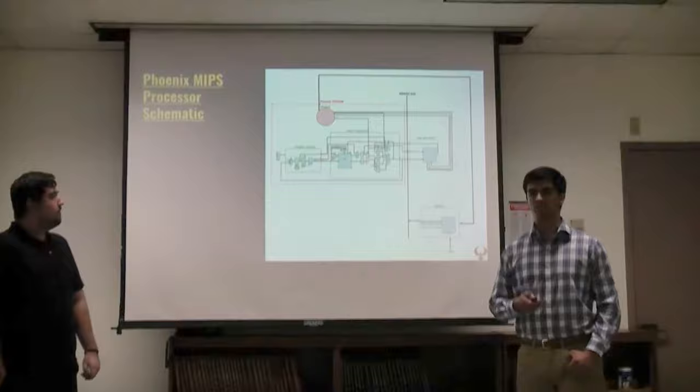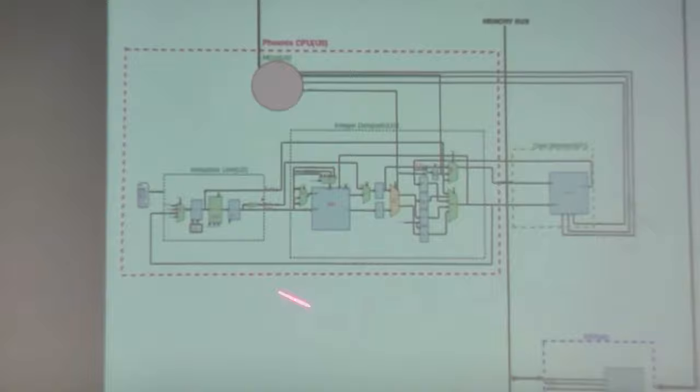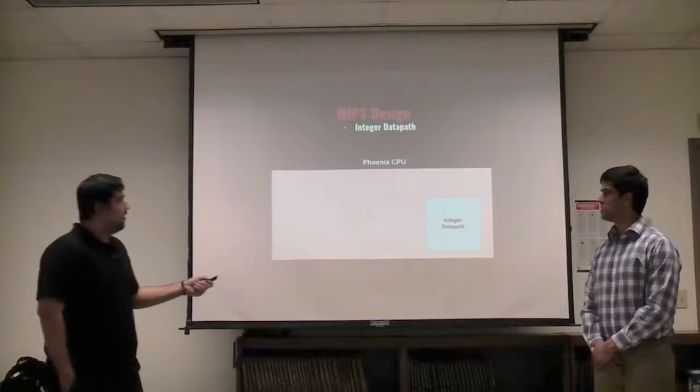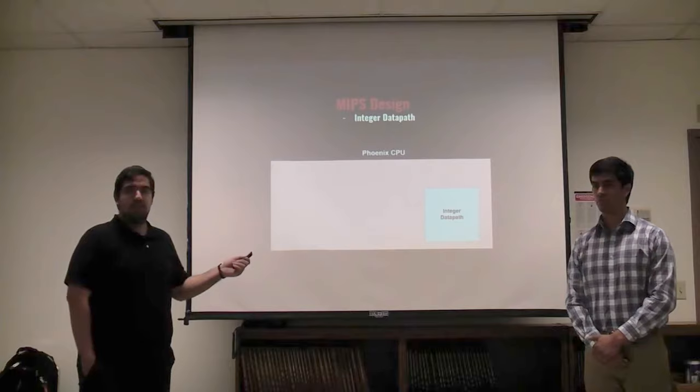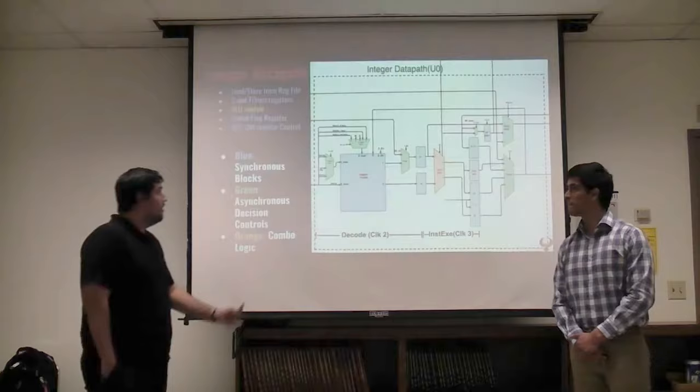Next we're going to be talking about the Phoenix MIPS schematic. This is a more in-depth diagram from the previous slide — essentially showing how complex the CPU is. The data memory modules are on the right-hand side again. The CPU is comprised of the integer data path, the instruction unit, and the control unit.